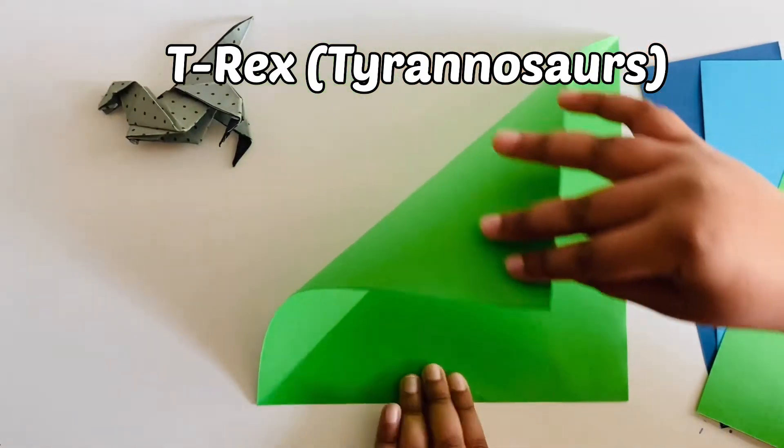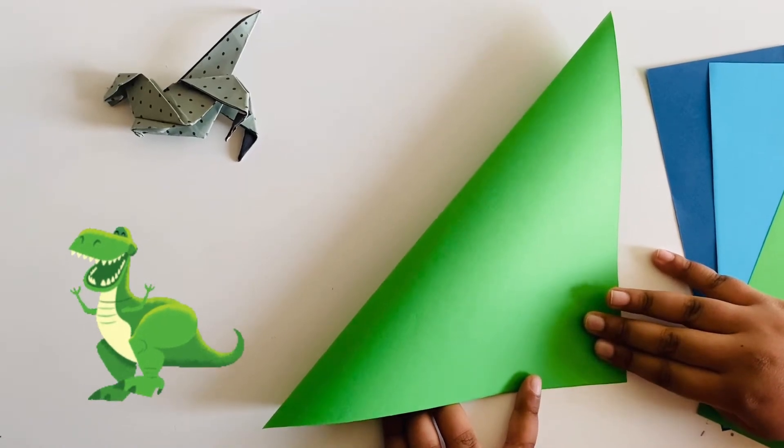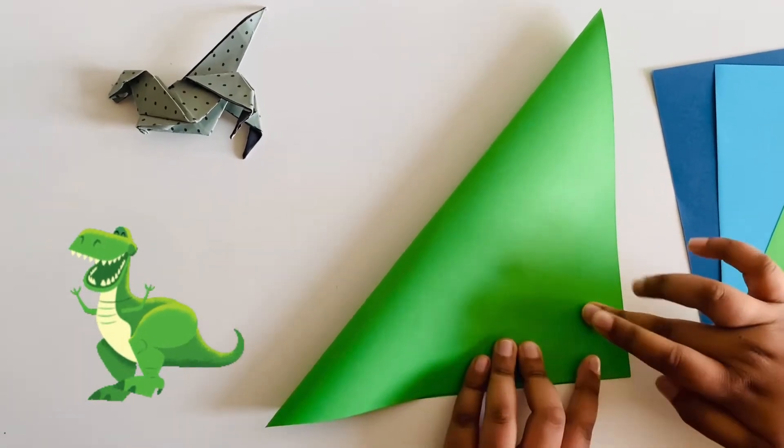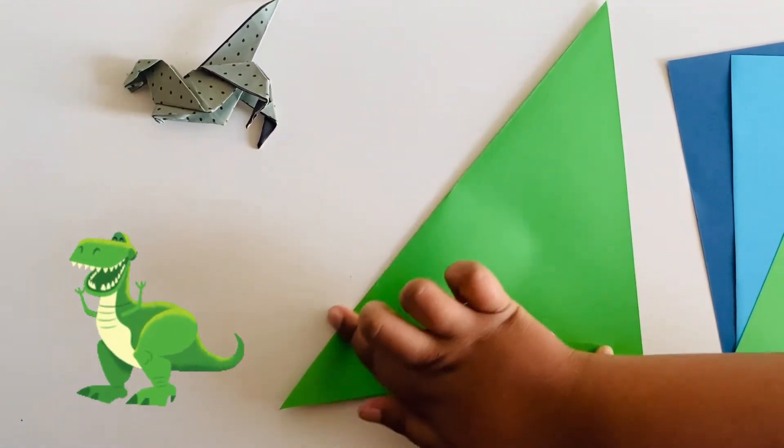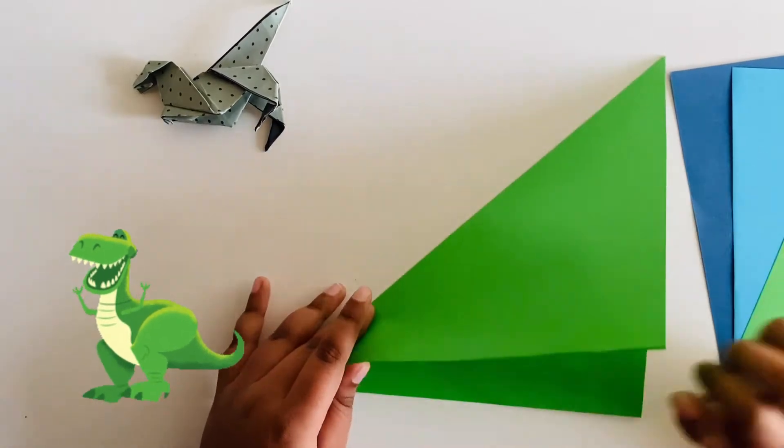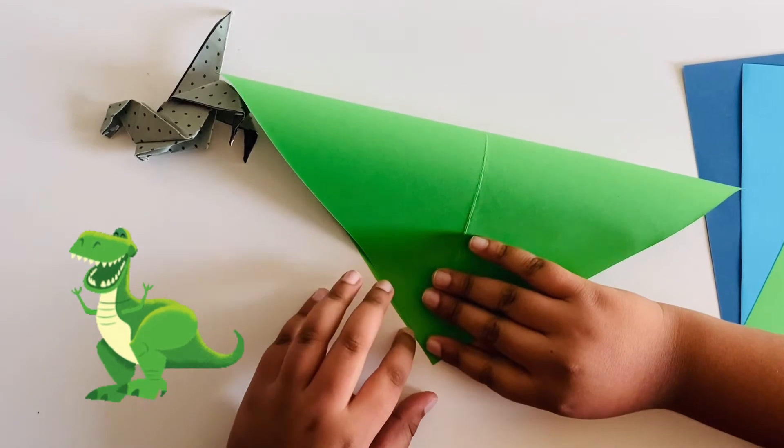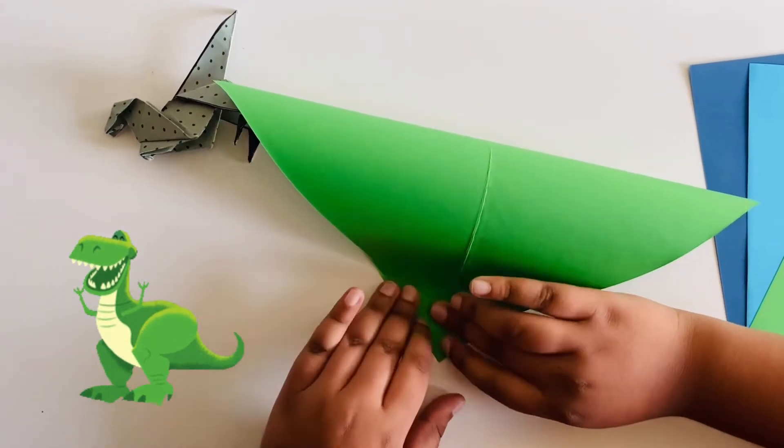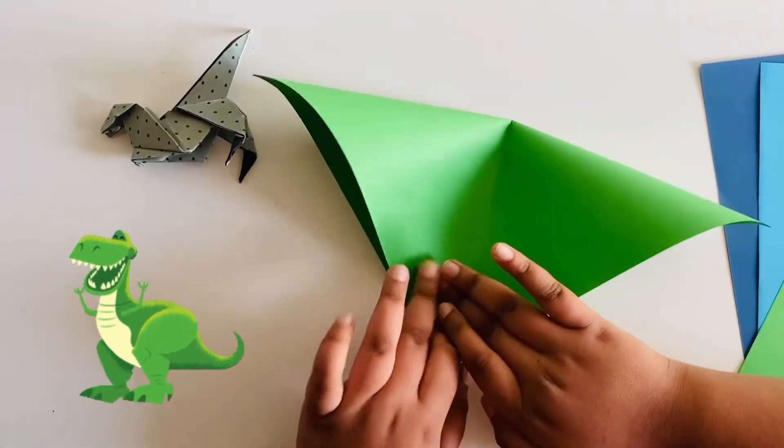So first take one end and then fold it here and now crease it hard because you will need to make the primary base. Open it again and then do the same process on the other side. Make sure it's neat.